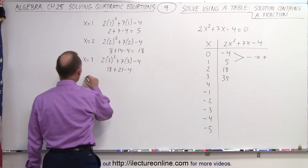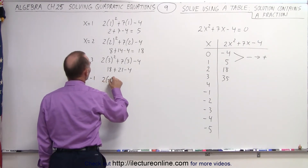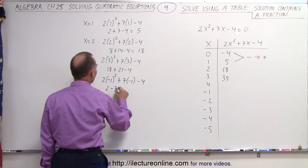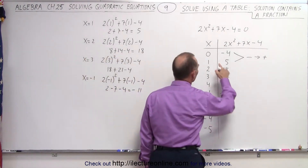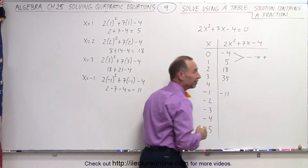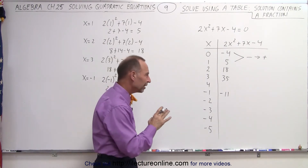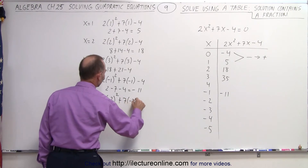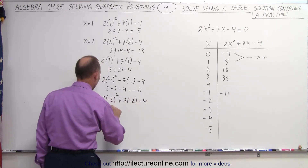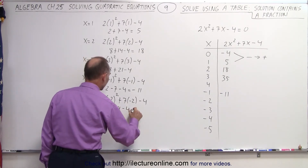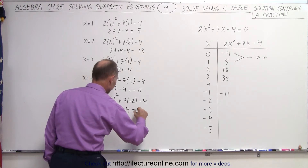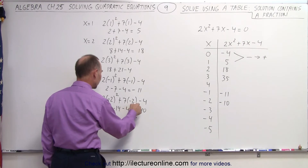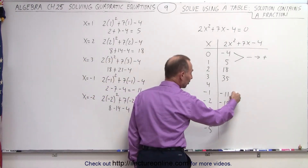How about x=-1? We get 2 times negative 1 squared plus 7 times negative 1 minus 4, which is 2 minus 7 minus 4, equal to negative 11. For x=-2, we get 2 times negative 2 squared plus 7 times negative 2 minus 4, that's 8 minus 14 minus 4, equal to negative 10. Notice that the result was getting further from 0, but now it has stopped doing that — negative 10 is closer to 0 than negative 11, so it may be converging back to 0.